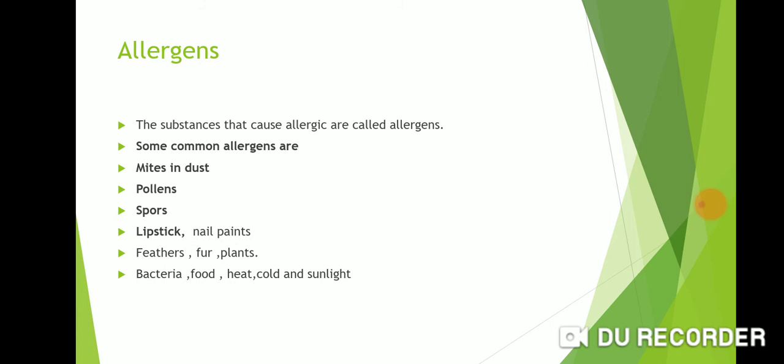The spores of Parthenium during the summer season spread rapidly in the air. When we breathe in oxygen, the pollen grains also go inside the respiratory tract. Pollen grains present in the air that enter the respiratory tract can cause allergy.